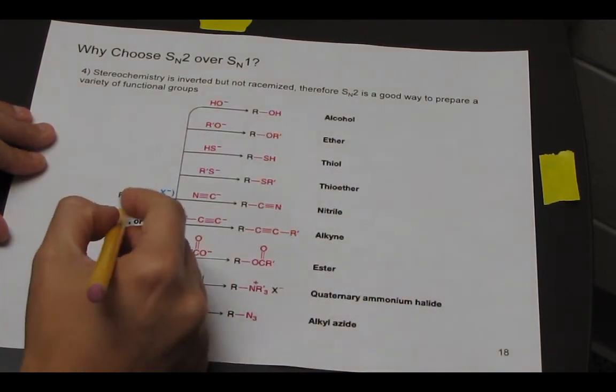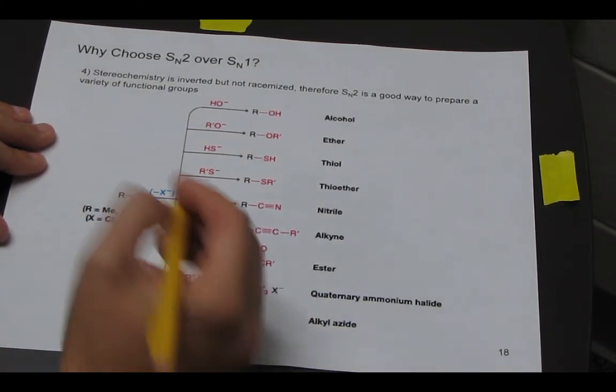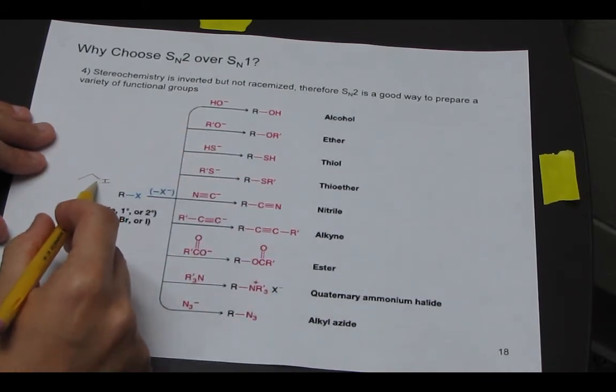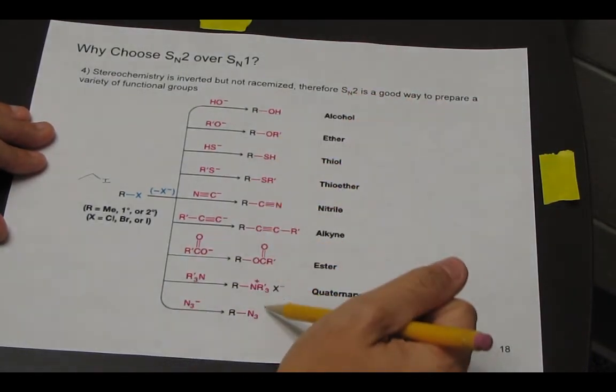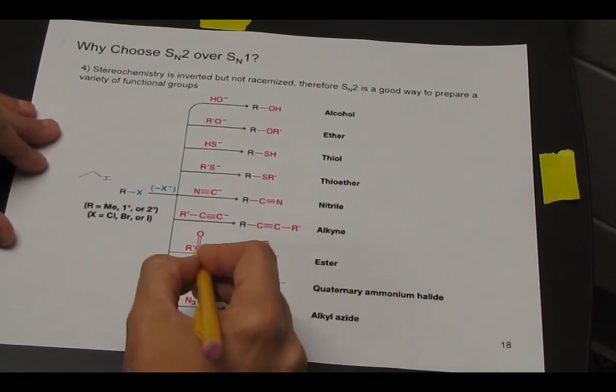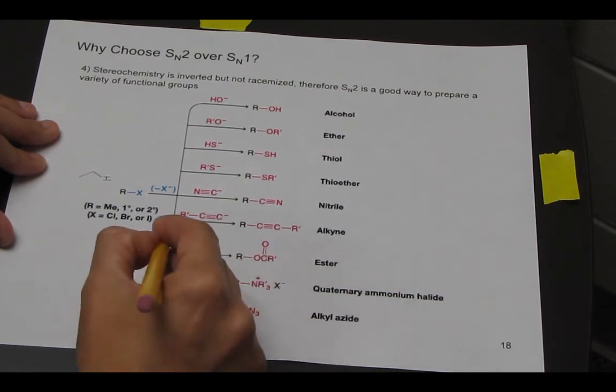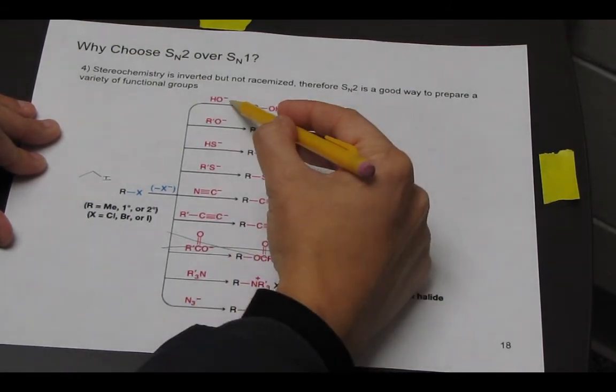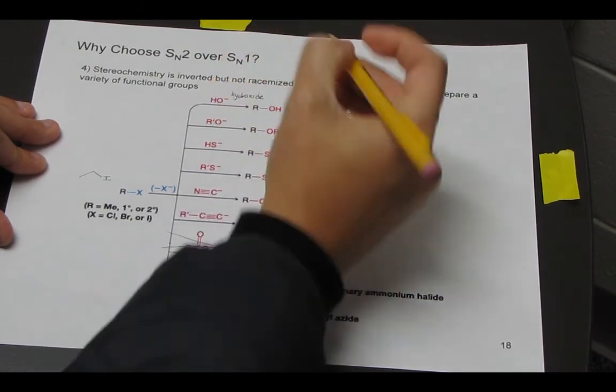And we can actually prepare a lot of different functional groups. So if our starting substrate has a primary or secondary halogen, so chloride, bromide, or iodide. So for example, here, this would be a primary iodide. We can use all of these nucleophiles and form all of these different products. Now, in general, this one is a little tougher because this fell under our weak nucleophile. So let me just take that off to prevent confusion.